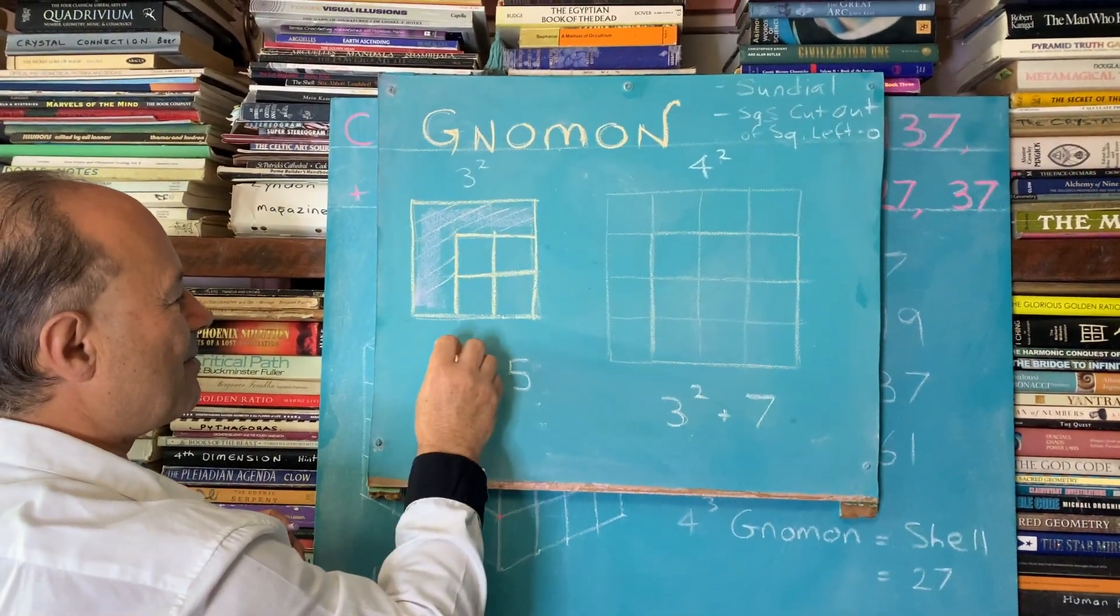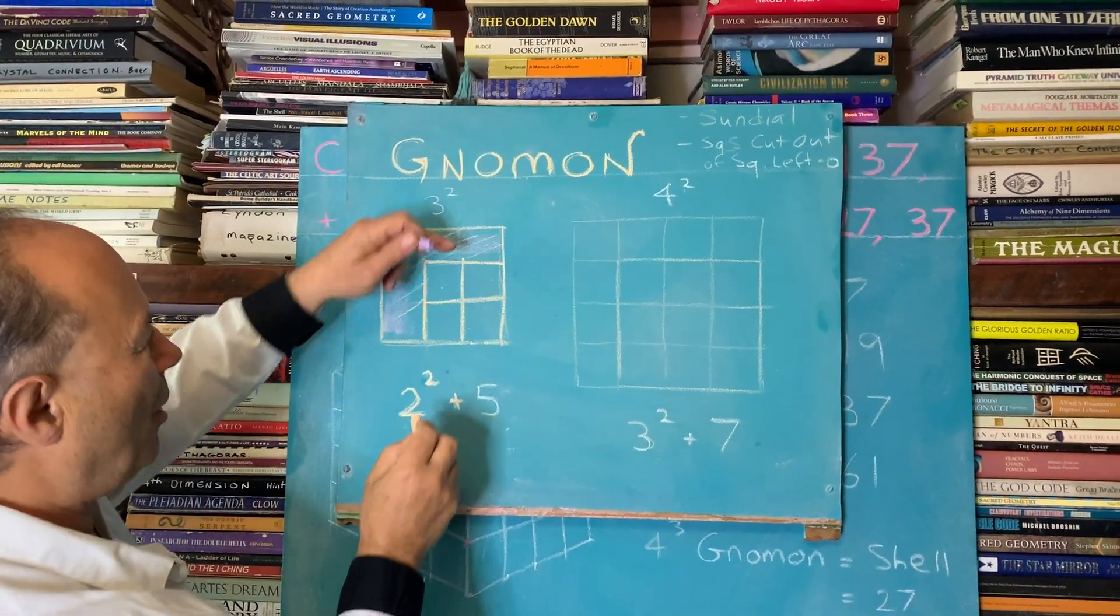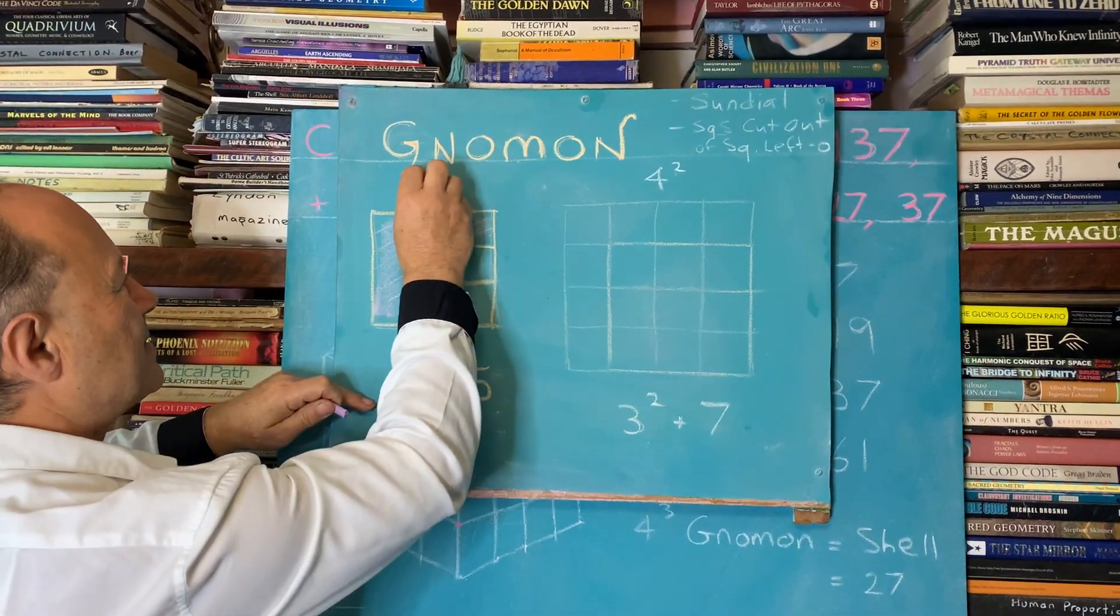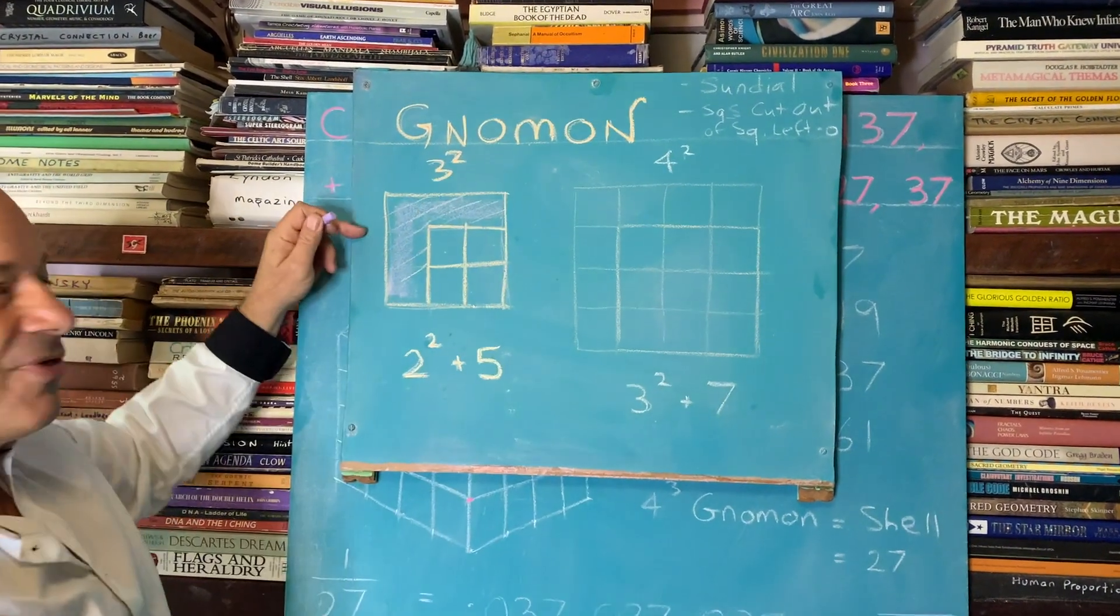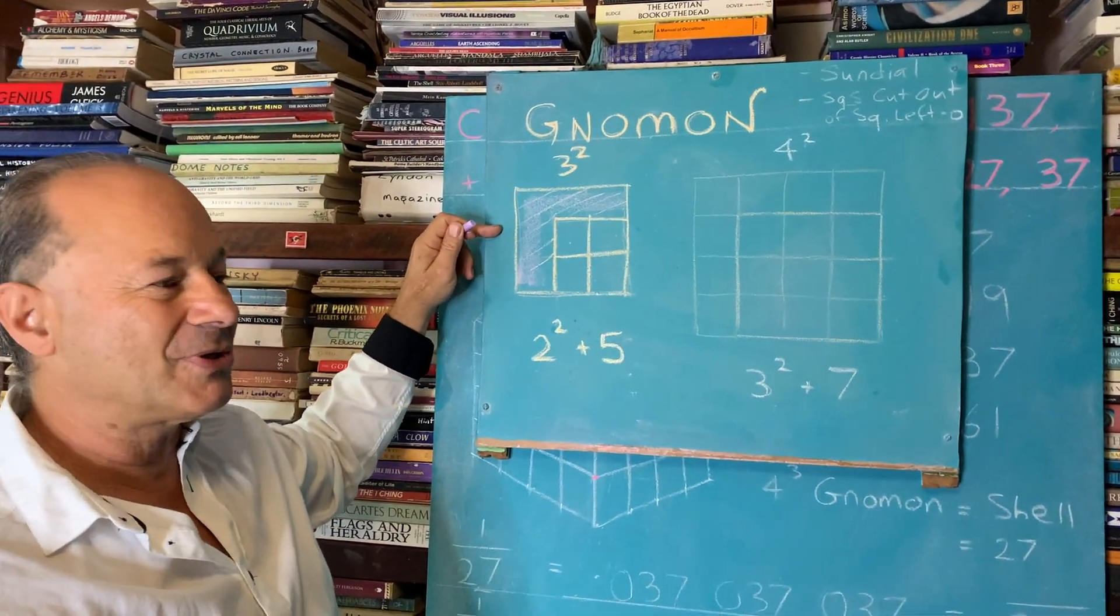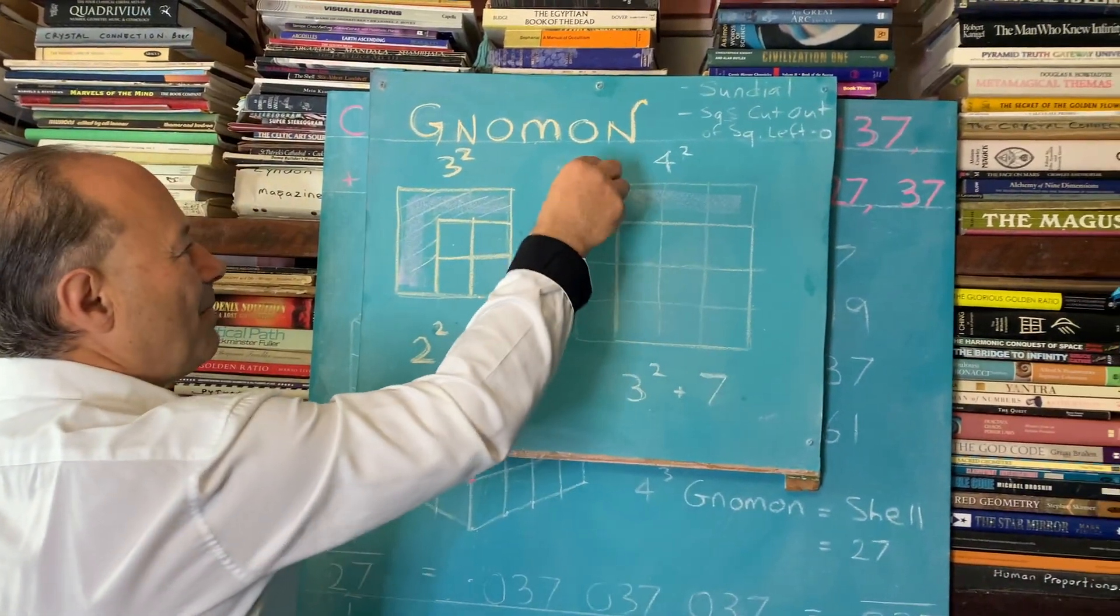So we can summarize and say that two squared plus the odd number 1, 2, 3, 4, 5, of the L shape makes 3 squared. So there's a whole theory of squared numbers are formed from smaller squares and gnomons. So we're going to examine this gnomon here.